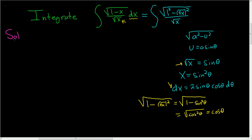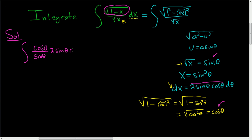Let's make our substitution. The numerator is cosine theta — you've got to be really careful in this step. The denominator is the square root of x, which we said was sine theta. And dx is 2 sine theta cosine theta d theta. The sines cancel.